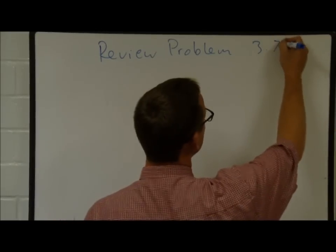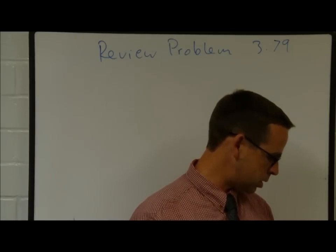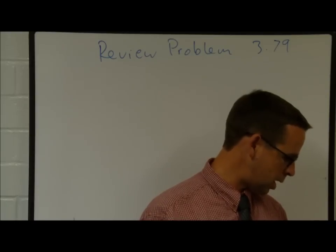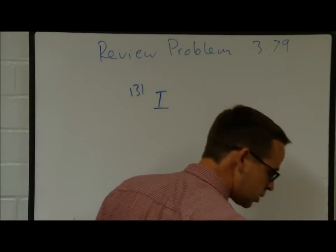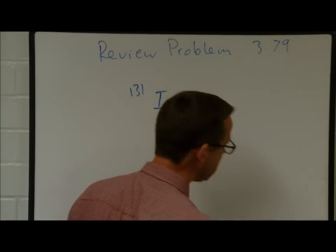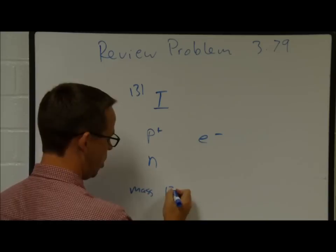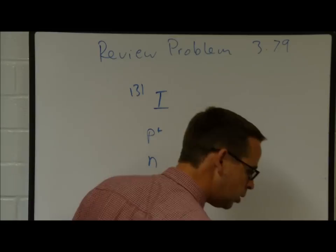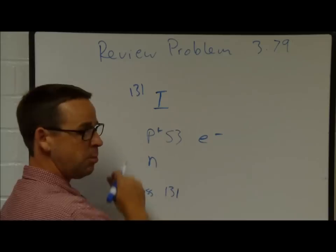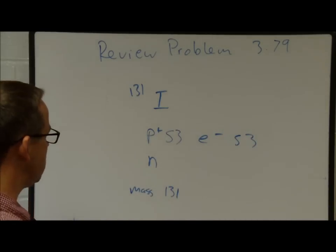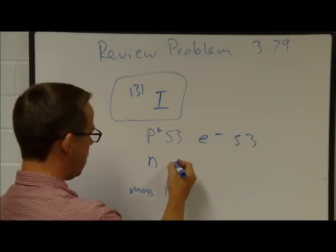Problem 379: Iodine-131 is used to treat overactive thyroid. It has a mass of 130.9061 units. Find the number of protons, neutrons, and electrons. The mass is 131. We look at iodine on the periodic table: element number 53. So 53 protons and, since there's no charge, 53 electrons. Neutrons: 131 minus 53 equals 78 neutrons.